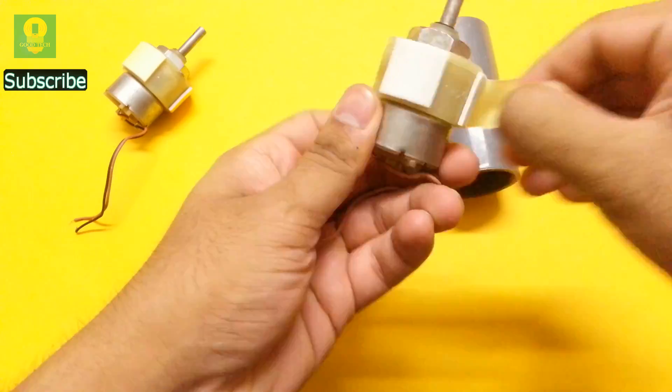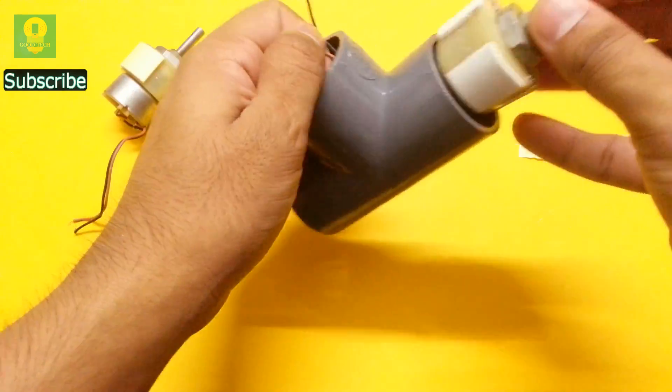Remove the insulation and fix the motors in the PVC tee in opposite directions.